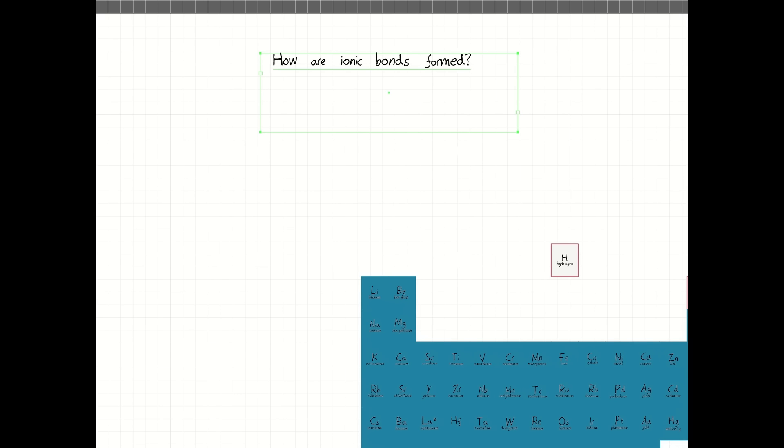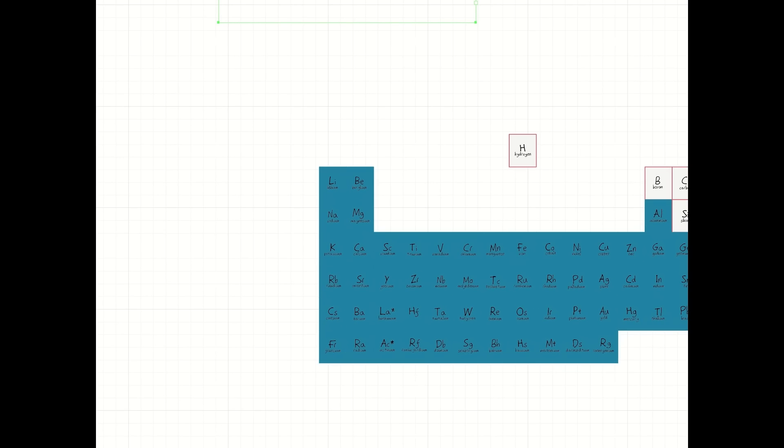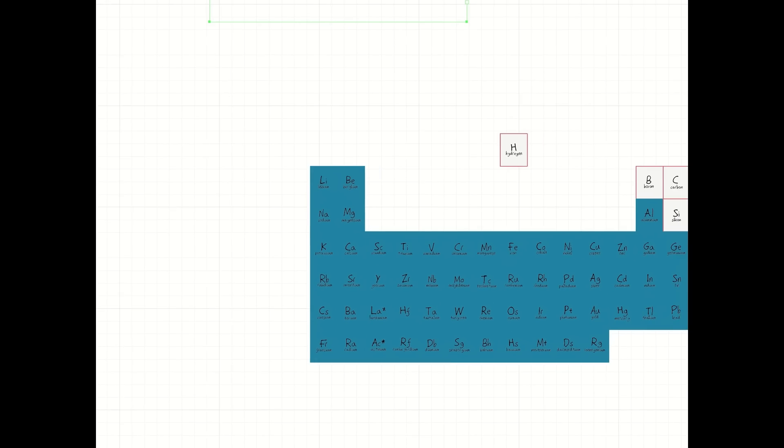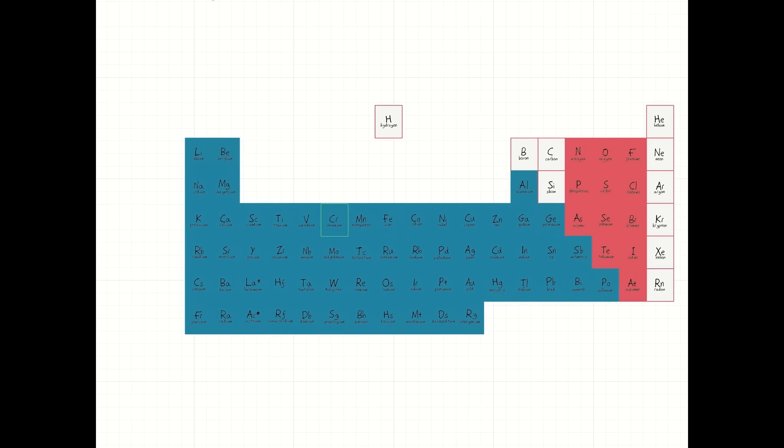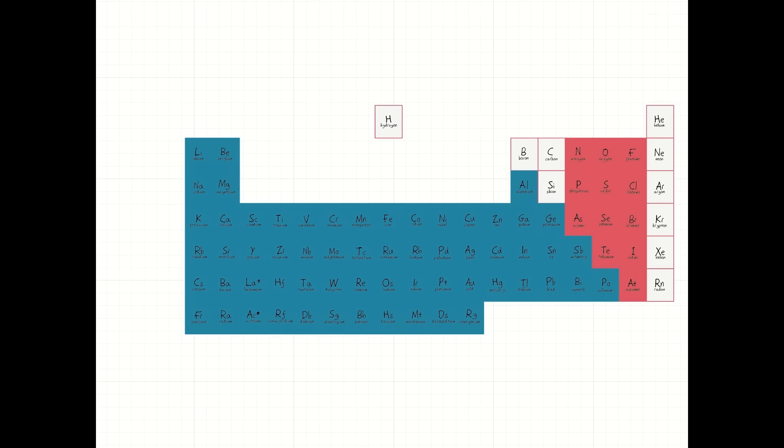As we saw in part 1, an ionic bond is formed between a metal, which are highlighted here in the periodic table, and a non-metal, which are highlighted in red in the periodic table here.